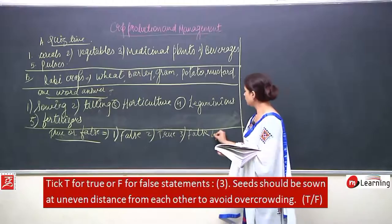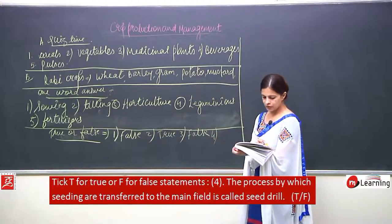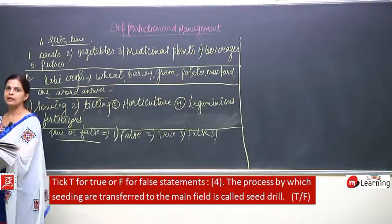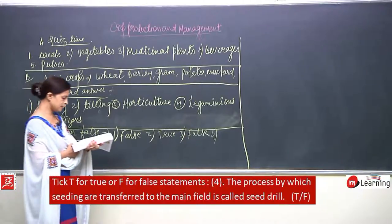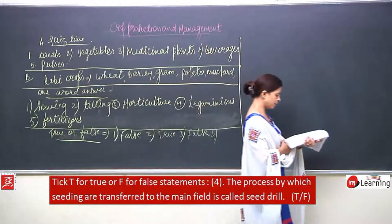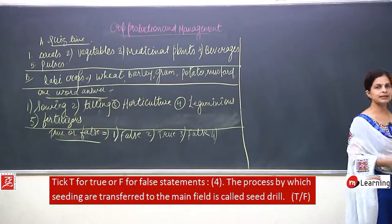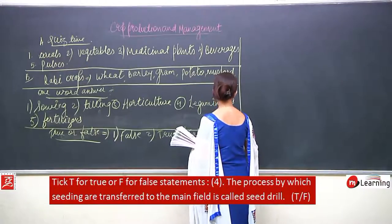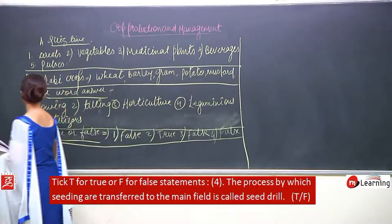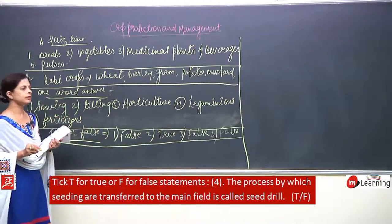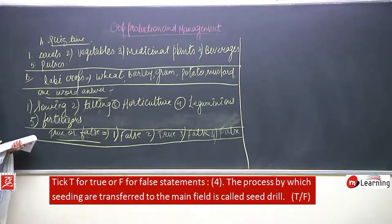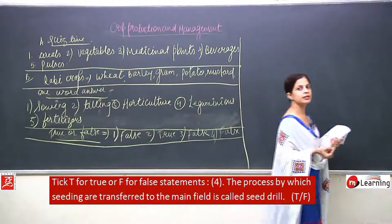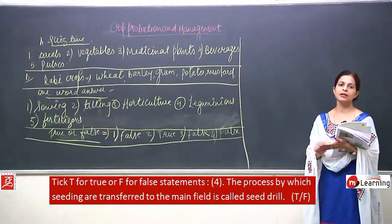Number 4: the process by which seedlings are transferred to the main field is called seed drill. No — it is known as transplantation, which is done in the case of rice. It is sown somewhere and then brought up in the fields.